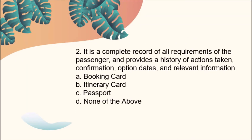Number two: It is a complete record of all requirements of the passenger and provides a history of actions taken, confirmation, option dates, and relevant information. A, booking card; B, itinerary card; C, passport; D, none of the above. The answer is Letter A, booking card.